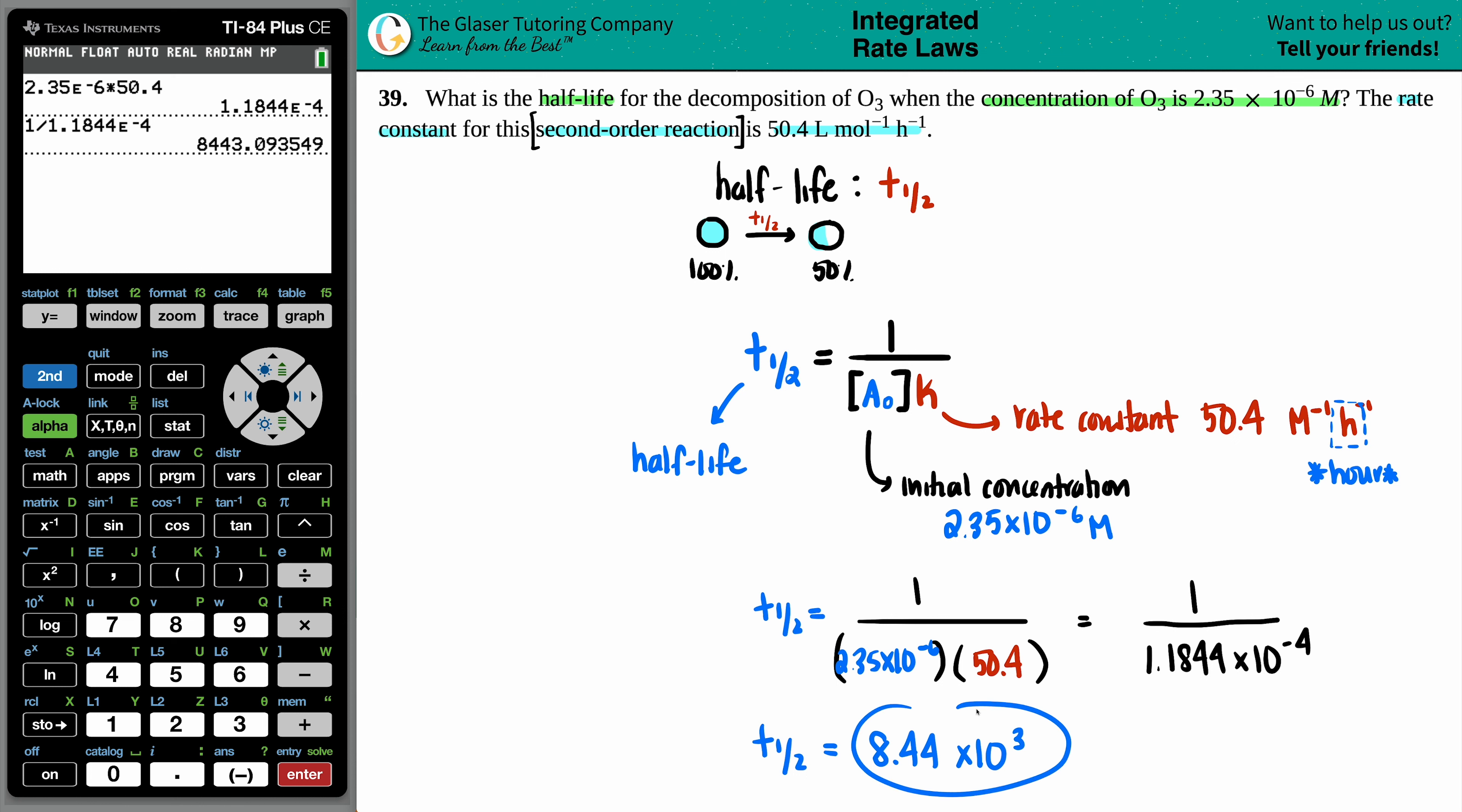So this, in order for this ozone to break down, 8,440 hours will have to pass in order for the ozone to go from 100% of what it started with to 50%. And that's it. I hope this helped.